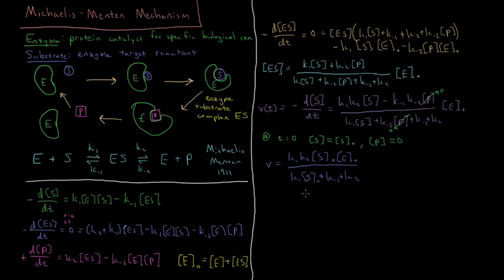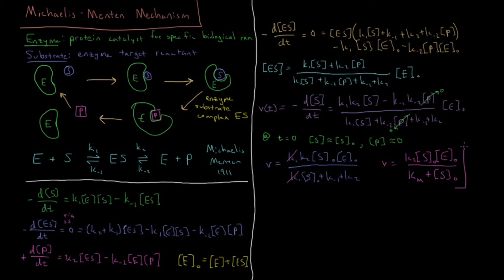Simplifying further, the K1 terms cancel, giving V equals K2·S0·E0 divided by (KM plus S0). Here KM is defined as (K-1 plus K2) divided by K1, and is called the Michaelis constant. This is our final expression for the reaction rate.